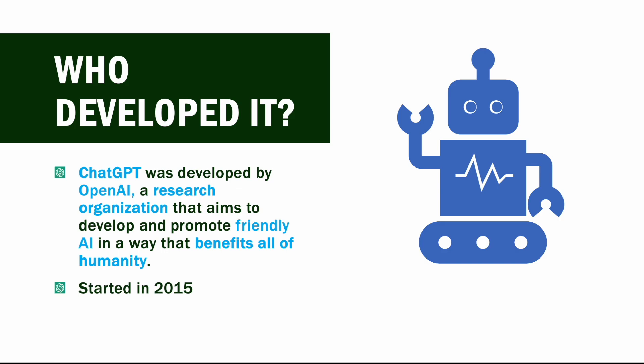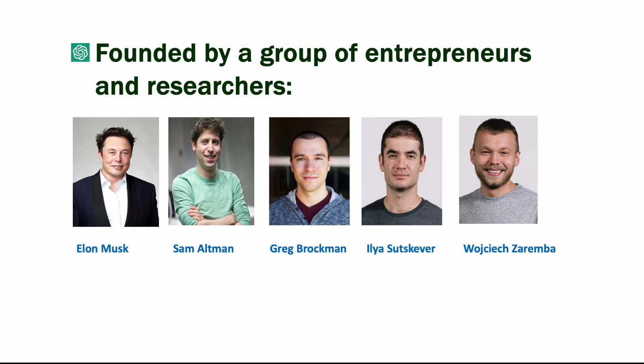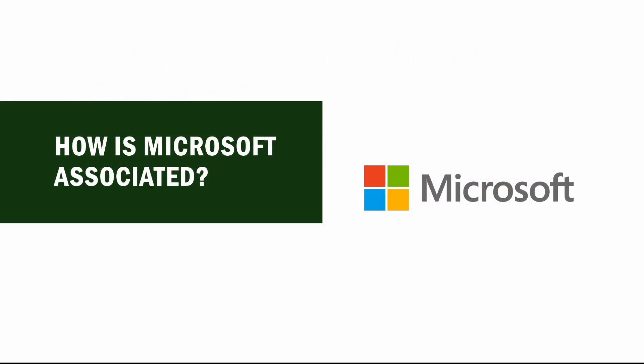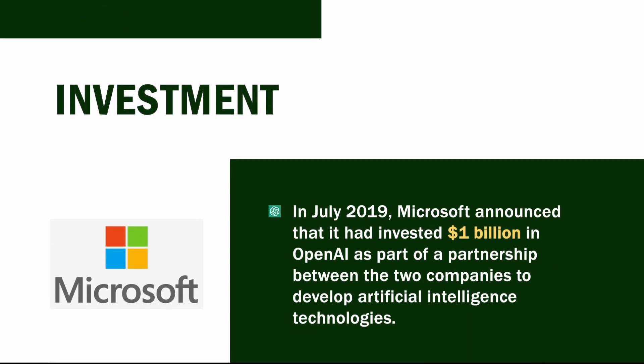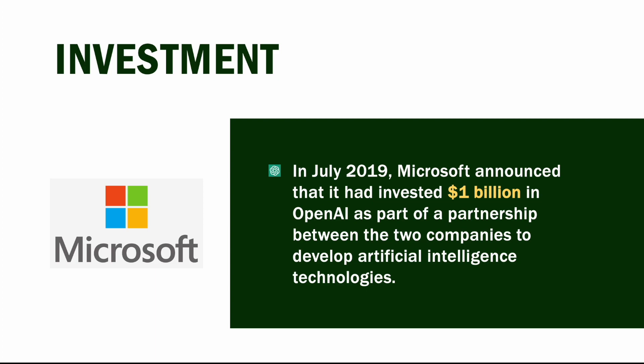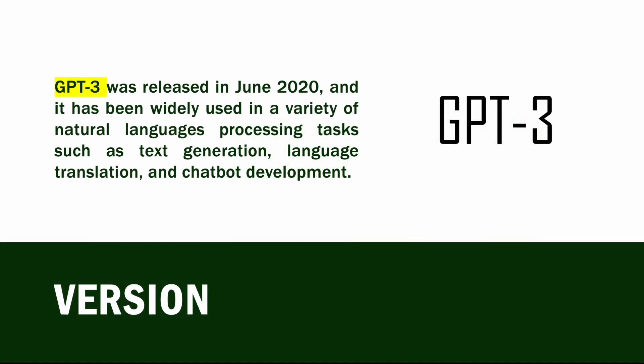ChatGPT was developed by OpenAI, a research organization aimed at building friendly AI that benefits all of humanity. It started in 2015 and was founded by a group of entrepreneurs including Elon Musk. Microsoft invested in OpenAI and has a partnership with the company, allowing Microsoft to use OpenAI language and AI models like GPT-3 in its products such as Azure AI, as well as integrating GPT-3 into its chatbot platforms. Microsoft invested around $1 billion in July 2019 as part of OpenAI, and this latest version is being used for chatbot development, translation, language, and other features.